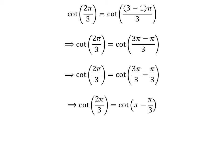Cancelling out the common factor in the numerator and the denominator gives us cotangent of 2 times pi upon 3 is equal to cotangent of pi minus pi upon 3.